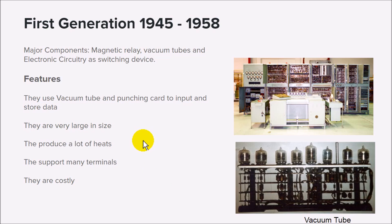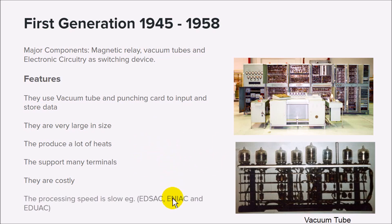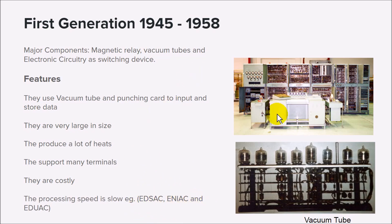Computers in this era were not even considered by individuals — only government institutions and similar organizations could afford them. The likes of the ENIAC that we talked about earlier are the kind of computers classified under the first generation.